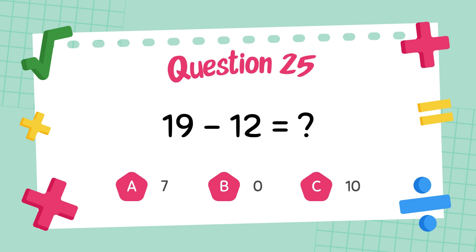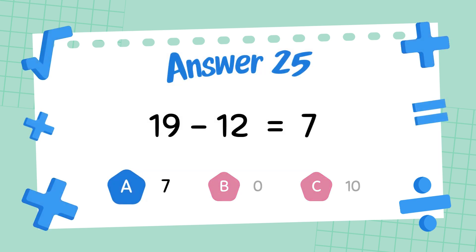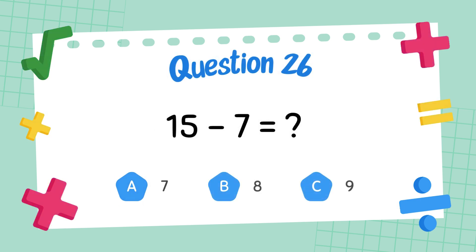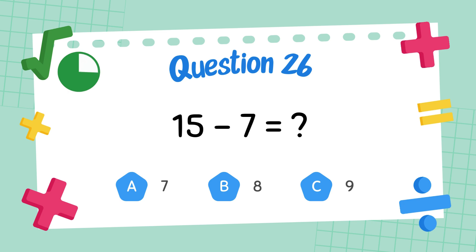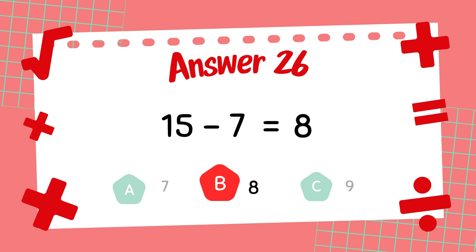What is 19 minus 12? The answer is 7. What is 15 minus 7? The answer is 8.